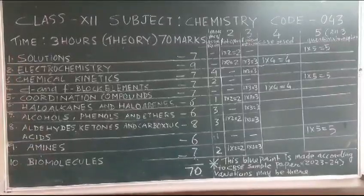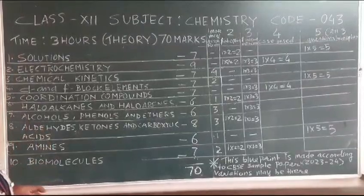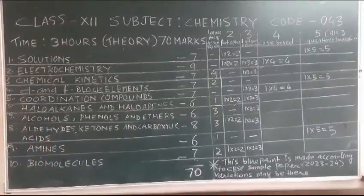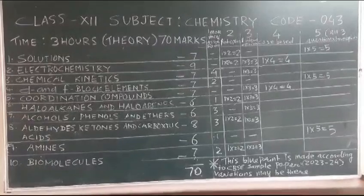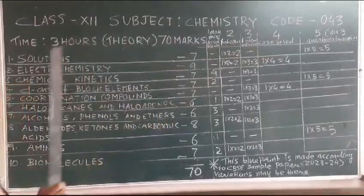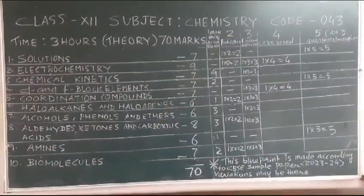Hello students, today I will tell you about the division of marks, that is the division of marks given by CBSE. As you see, this is for Class 12, subject Chemistry, code is 043. Time duration will be 3 hours and theory will be of 70 marks.